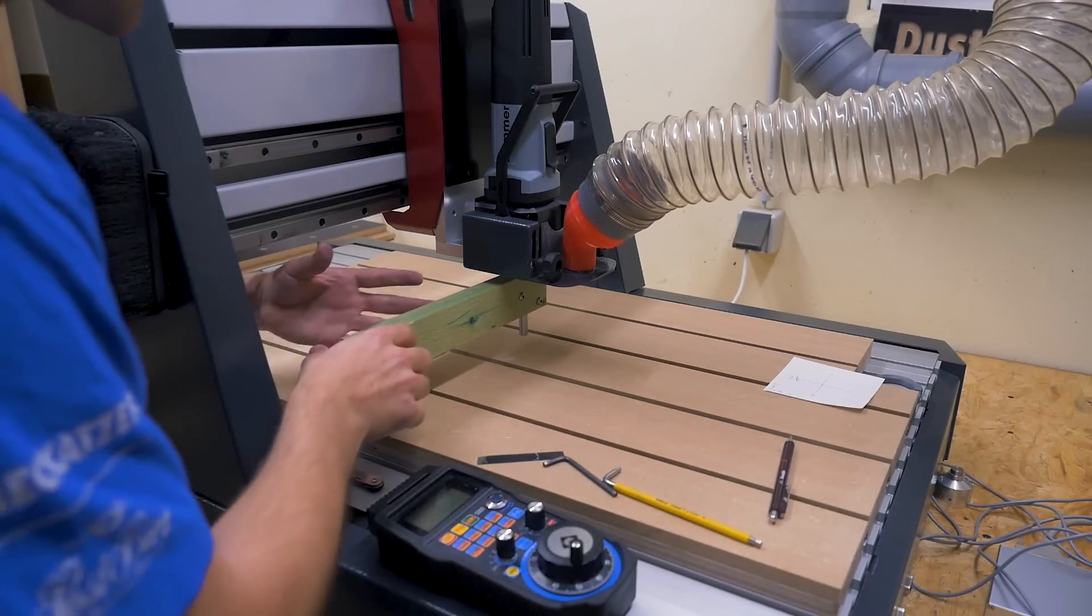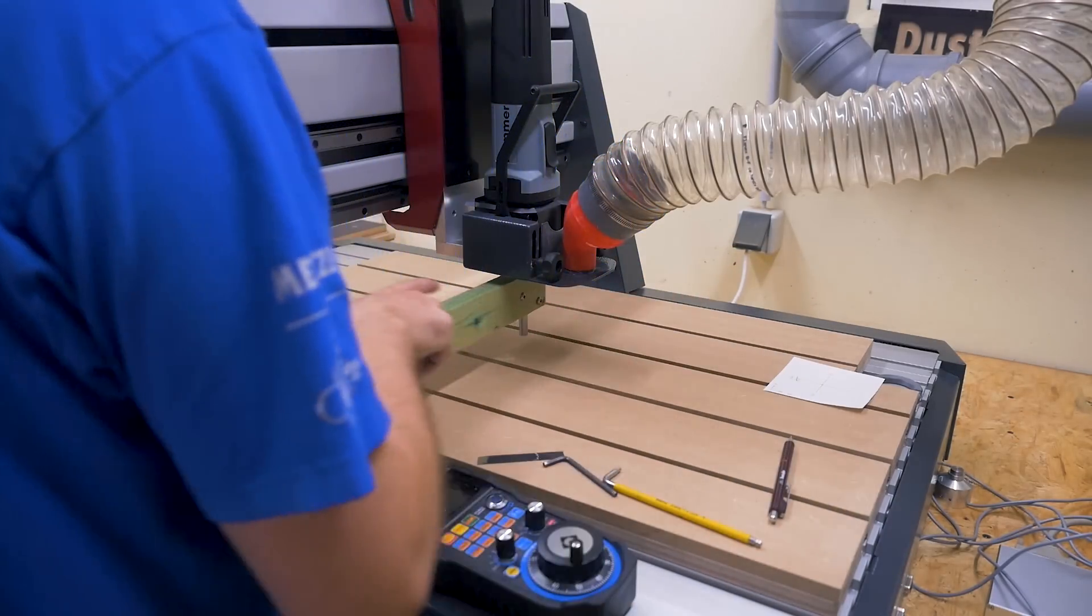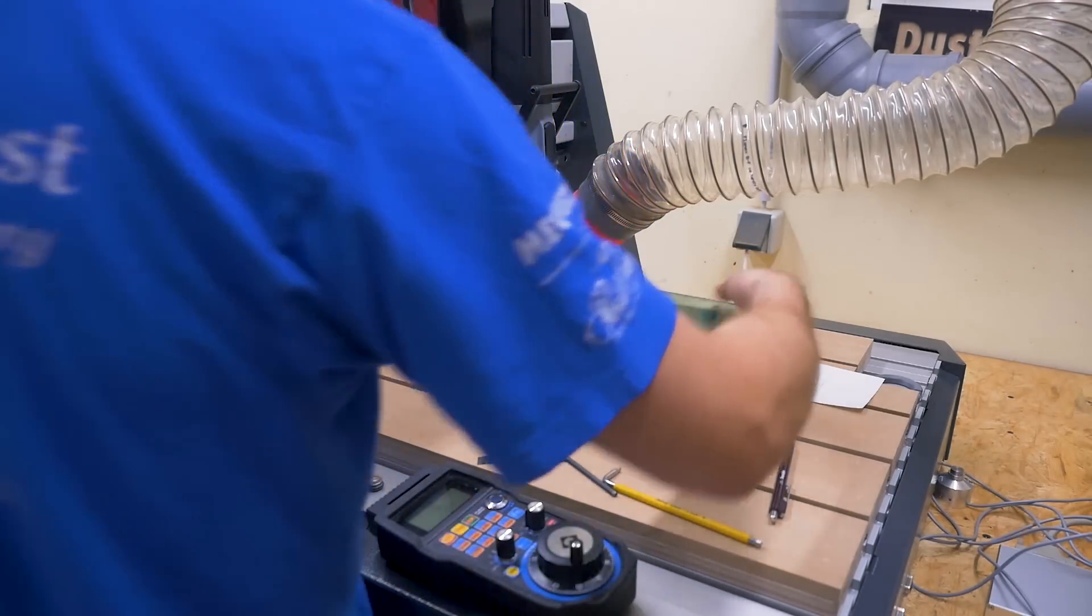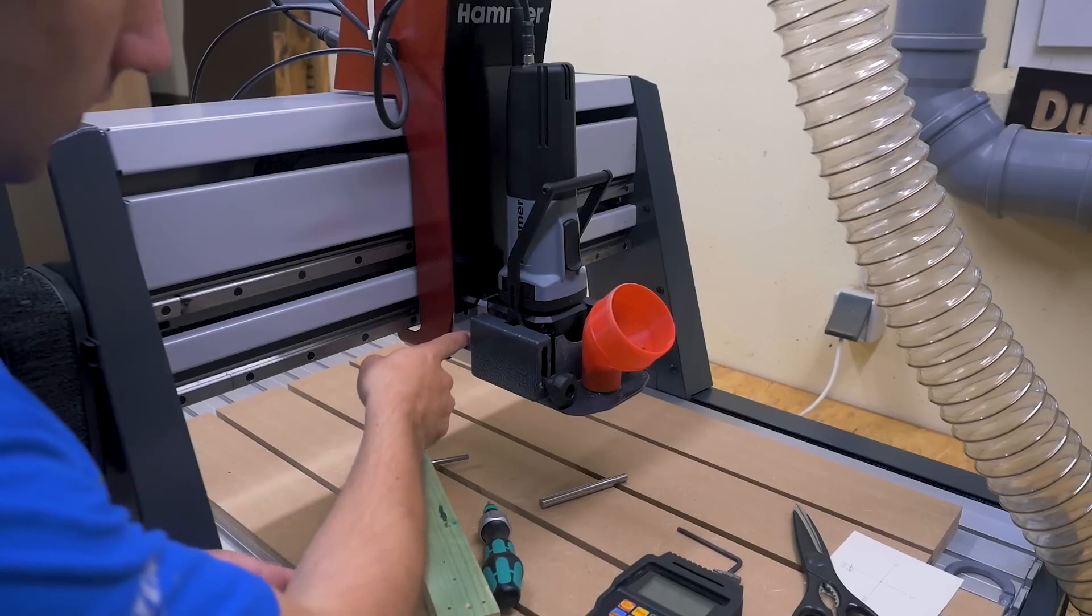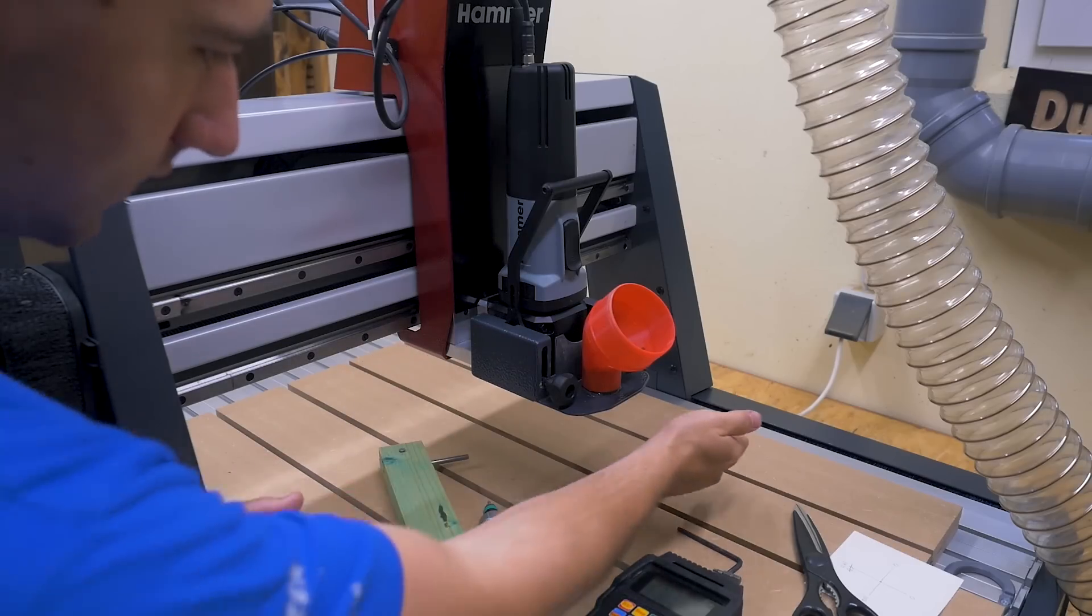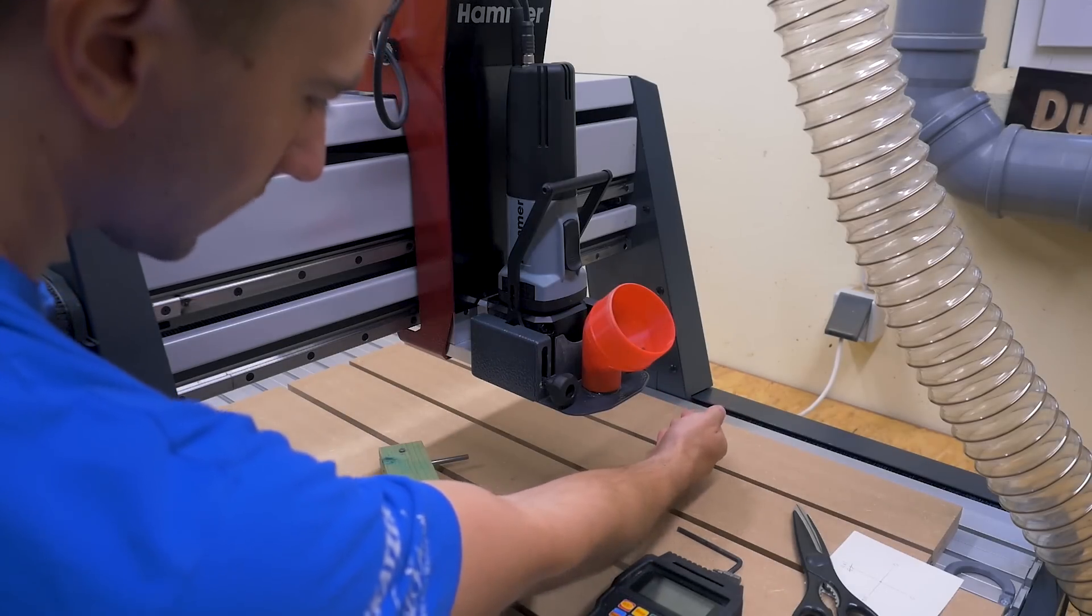Now I need to do the same for the side to side adjustment. As you can see, that's not done yet. Okay, there are now also some shims in here and I got the difference between the two points also to about one tenth.